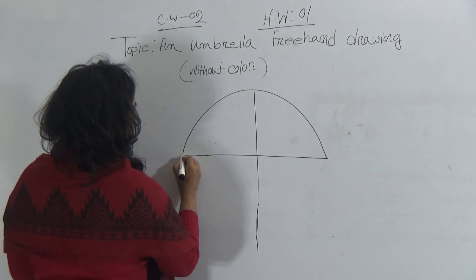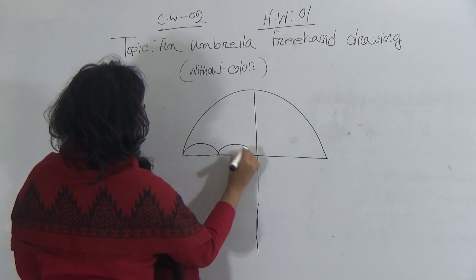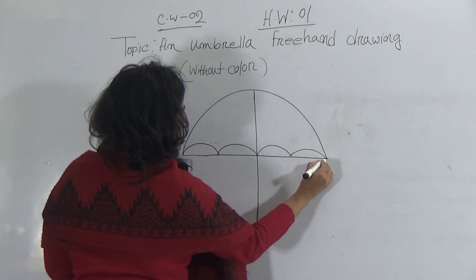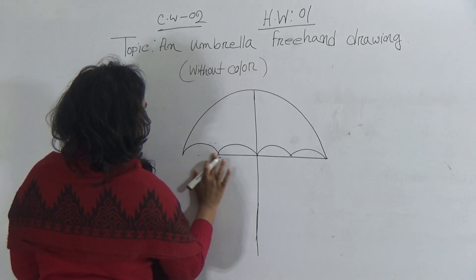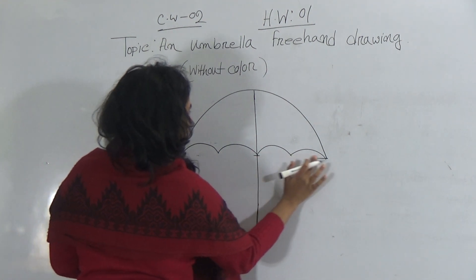Then give this type of things. One, two. One, two. And then erase this line. Okay.